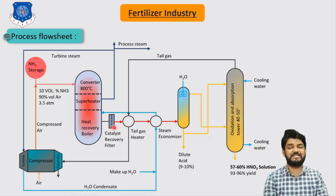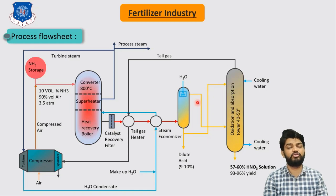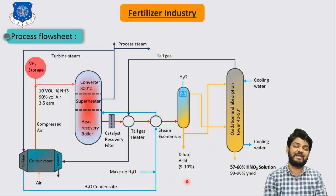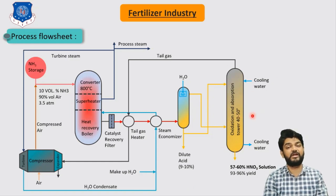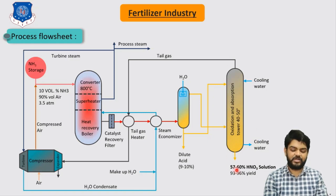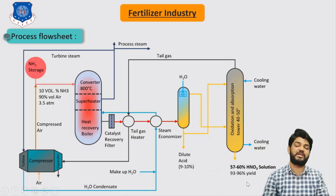The product stream is then sent to the catalyst recovery section where we recover our precious platinum catalyst. After the steam economizer it is sent to the water absorption tower, where we produce a dilute amount of nitric acid of around 9 to 10%. Further, this product stream is sent to the oxidation and absorption tower, where we supply water in a counter-current manner to produce nitric acid from NO2 gas, yielding nitric acid of 57 to 60% concentration.